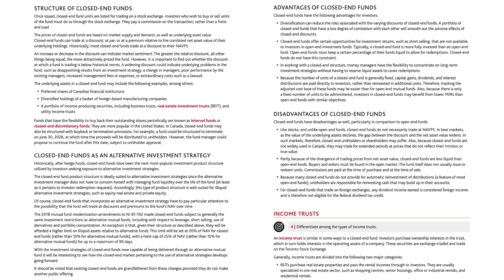The underlying assets in a closed-end fund may include preferred shares of Canadian financial institutions, diversified holdings of a basket of foreign-based manufacturing companies, and a portfolio of income-producing securities including business trusts, real estate investment trusts, and utility income trusts. Funds that have the flexibility to buy back their outstanding shares periodically are known as interval funds or closed-end discretionary funds. They are more popular in the United States, but in Canada, closed-end funds may also be structured with buyback or termination provisions. For example, a fund could be structured to terminate on June 30th, 2028, at which time the proceeds will be distributed to unit holders. However, the fund manager could propose to continue the fund after this date, subject to unit holder approval.